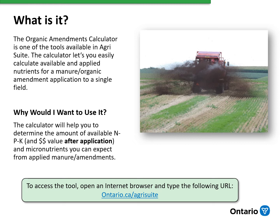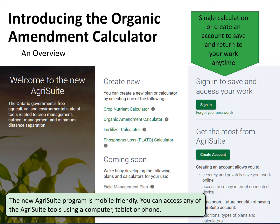To access the tool, follow this link. The Organic Amendment Calculator is one of the standalone tools in Egrosuite, along with the Crop Nutrient Calculator, the Fertilizer Calculator, and the Phosphorus Loss Calculator.